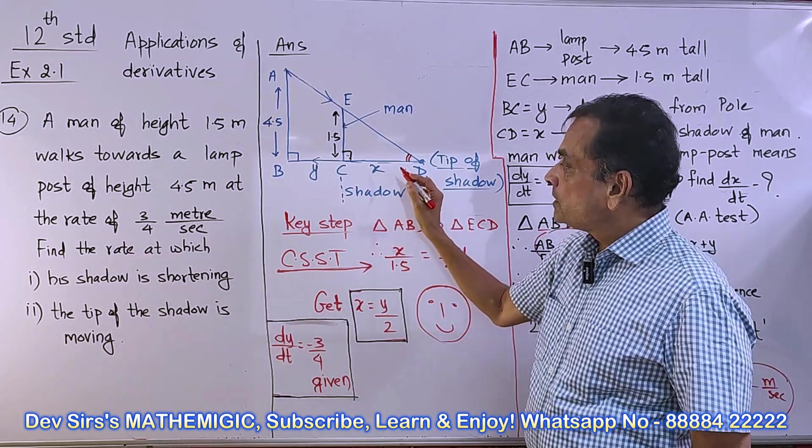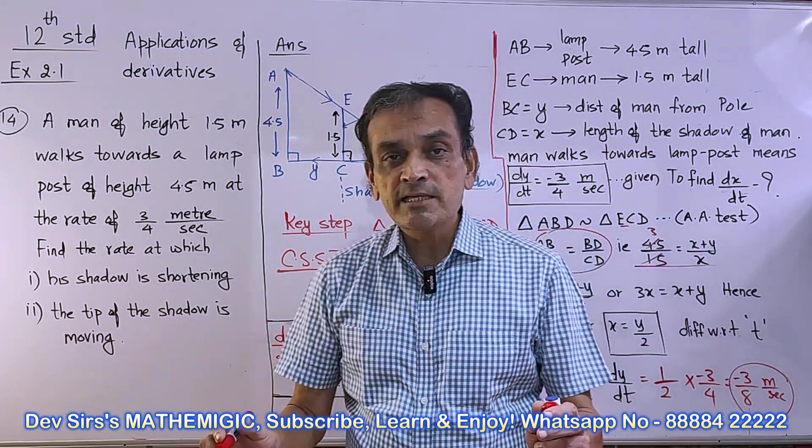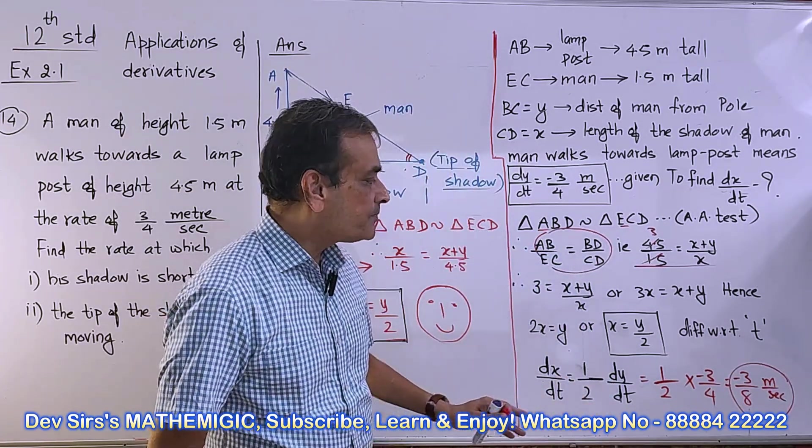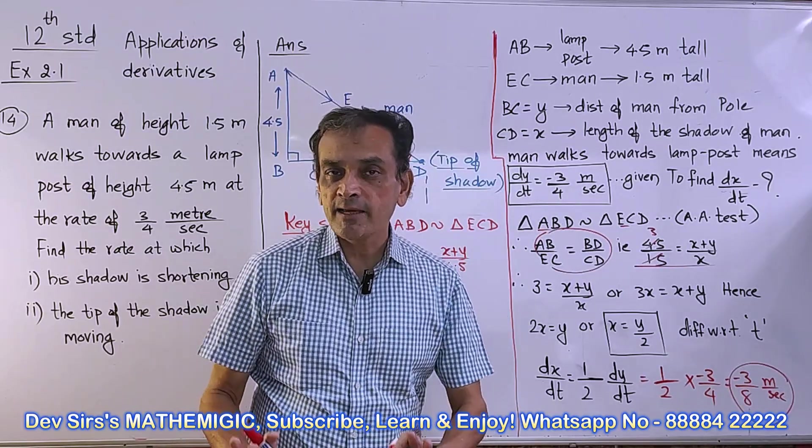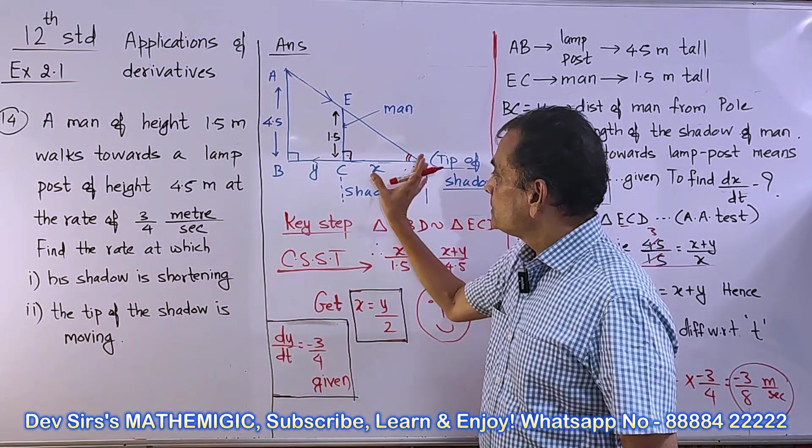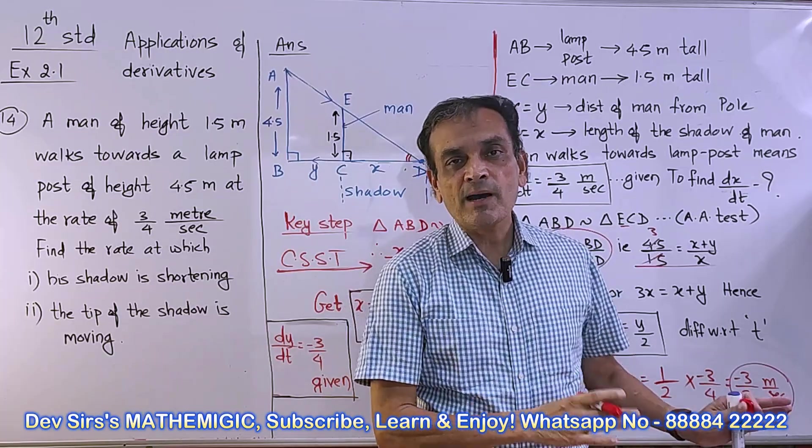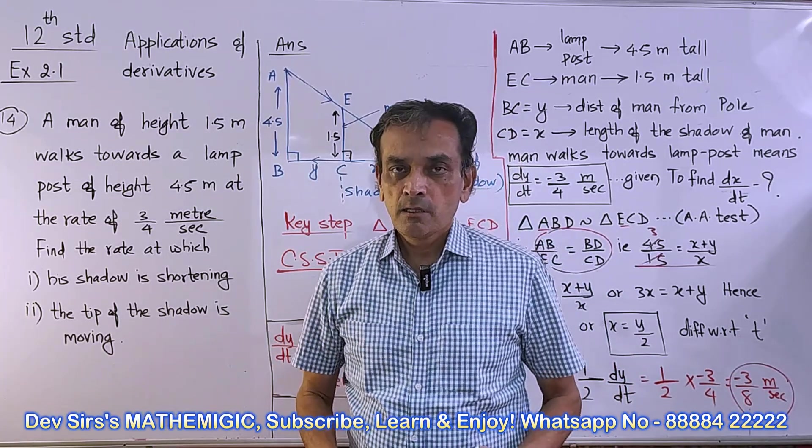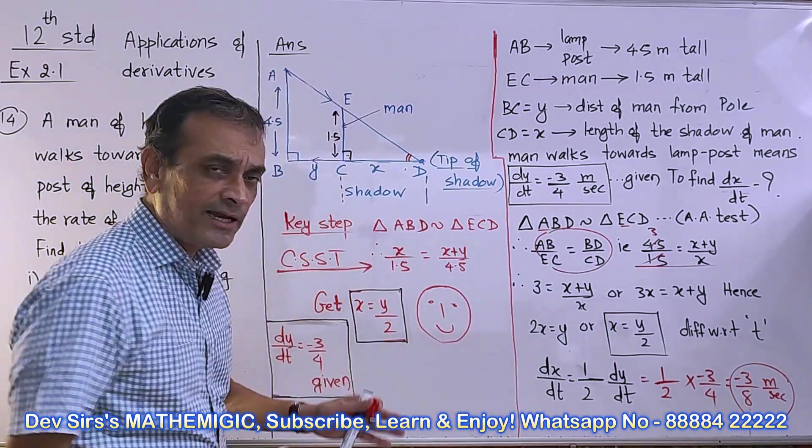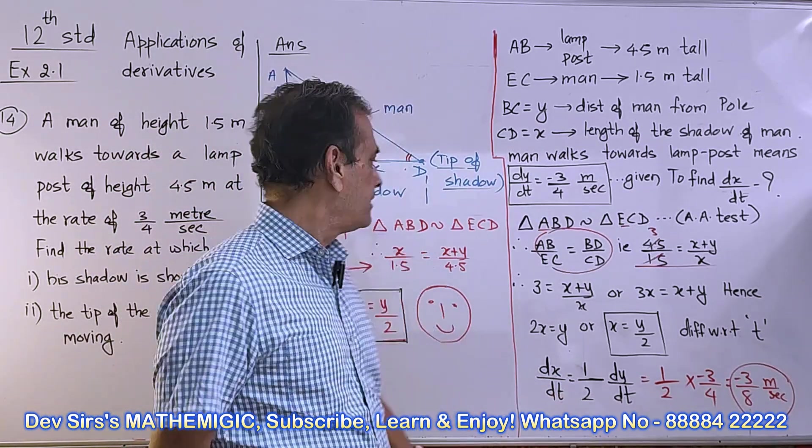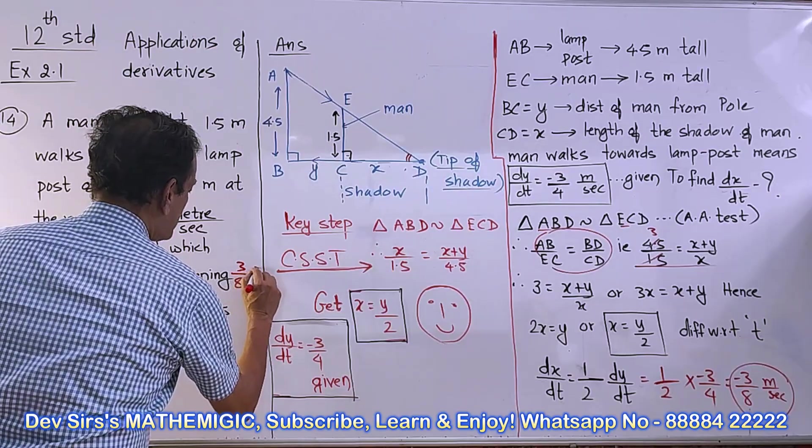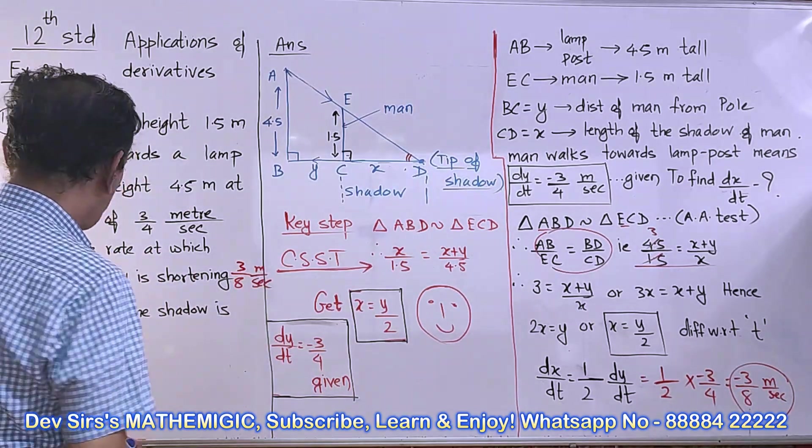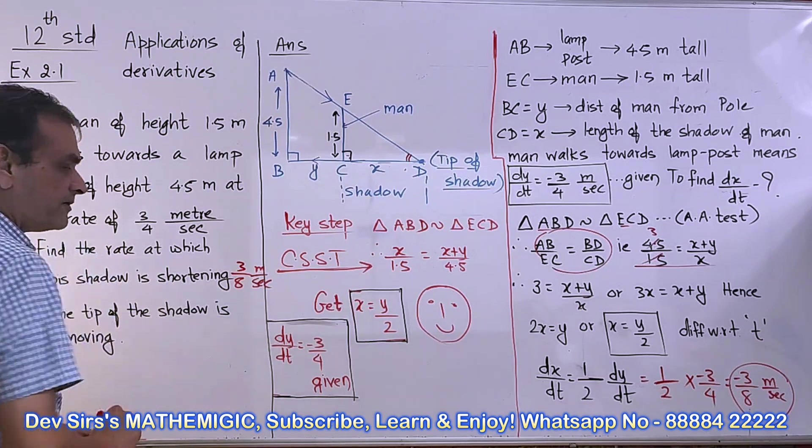This represents dX/dT. That means the shadow is decreasing or shortening at the speed of 3/8 meters per second. Speed cannot be negative, I agree. Minus sign only indicates that the shadow is decreasing, it's a convention. So the first answer is 3/8 meters per second.